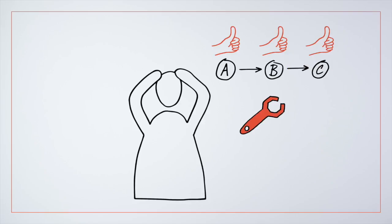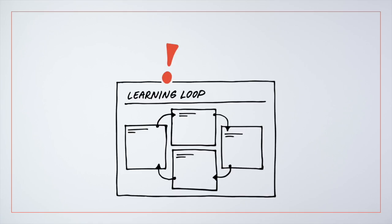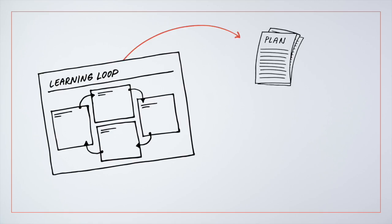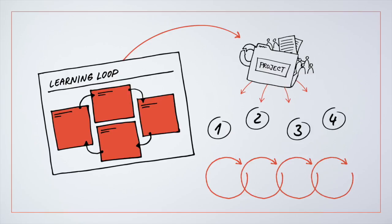The learning loop tool helps you to make sense of what you have done in the past or what you intend to do. It can help you to plan your next steps by breaking down your project into stages for continuous improvement.